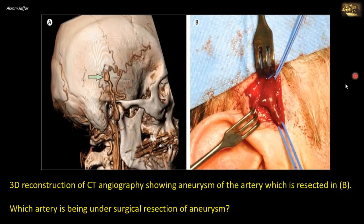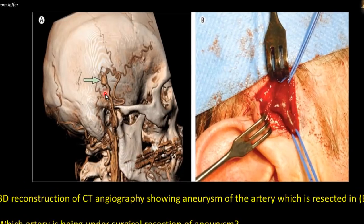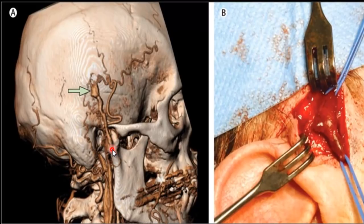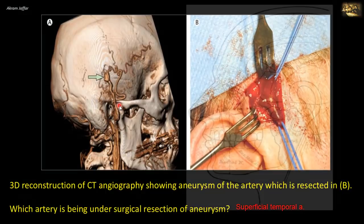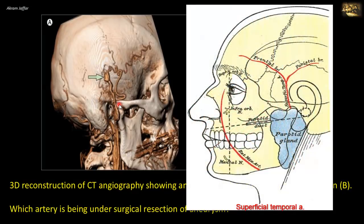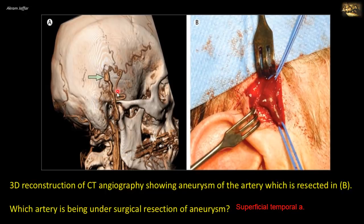A 3D reconstruction of CT angiography shows an aneurysm of an artery under surgical resection. The artery is a terminal branch of the external carotid artery. The external carotid gives the maxillary artery, which goes deep to the neck of the mandible into the infratemporal fossa, and the superficial temporal artery, which crosses the zygomatic arch in front of the tragus of the ear where it can be palpated. The aneurysm is located more superior to the tragus, identifying this as the superficial temporal artery.